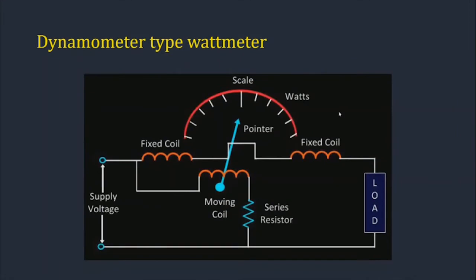The construction and working of the dynamometer type wattmeter: there are two fixed coils and a moving coil that is free to move inside the space provided by the two fixed coils. The fixed coils are wound with thick wires and the moving coil is wound with thin wires. The flux produced by the fixed coils is proportional to the current through the load, and the flux produced by the moving coil is proportional to the voltage across the load. The interaction of fluxes causes a reading in watts.